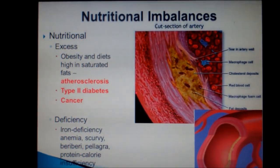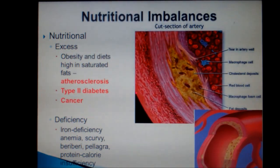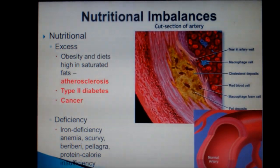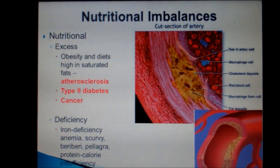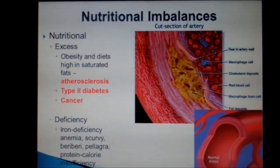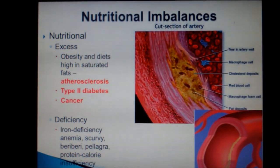Nutritional imbalances are pretty straightforward. We can have cell damage from either having too much of a good thing, or bad, or too little nutrients. For example, having an excess of calories or saturated fats on a regular basis can lead to many conditions, including obesity, atherosclerosis, type 2 diabetes mellitus, and cancer.